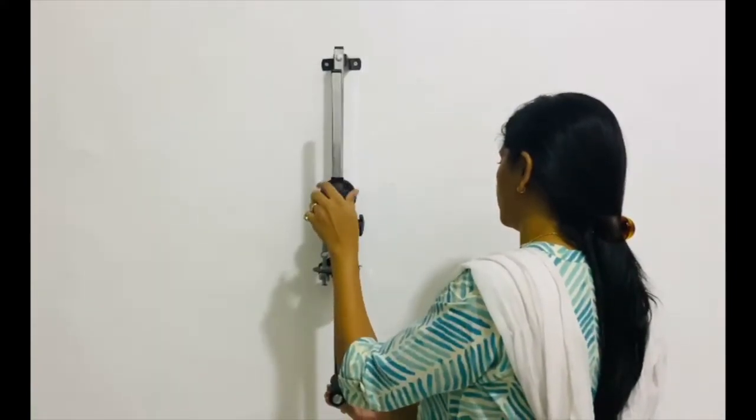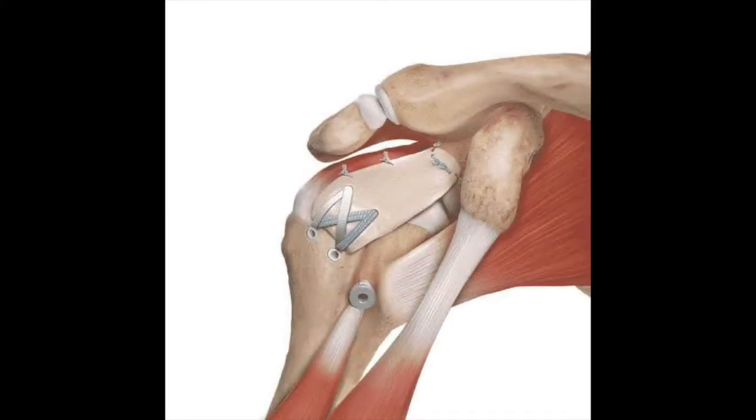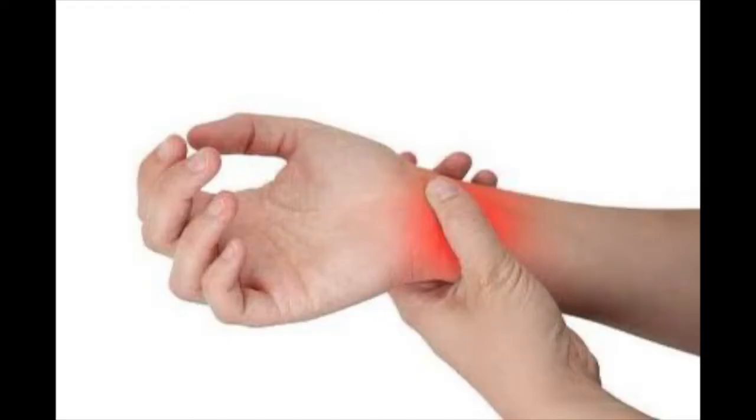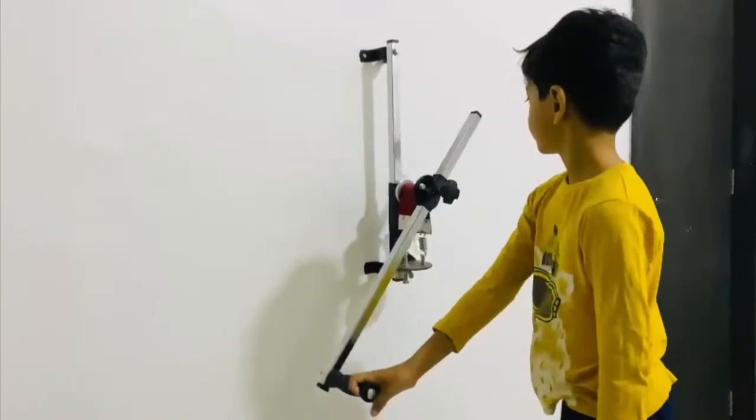The shoulder wheel is used to increase mobility at the shoulder joint, elbow joint, and wrist joint. It progressively strengthens the muscles of the upper limb. How to use the shoulder wheel: patient stands facing the shoulder wheel.